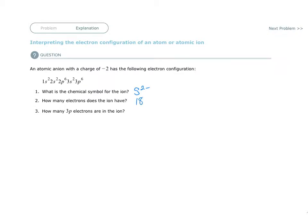And then the last question, how many 3p electrons are in the ion? Well, that's actually pretty easy. It's 3p6. So there's 6. If it says 3p6, there's 6 3p electrons. Thank you.